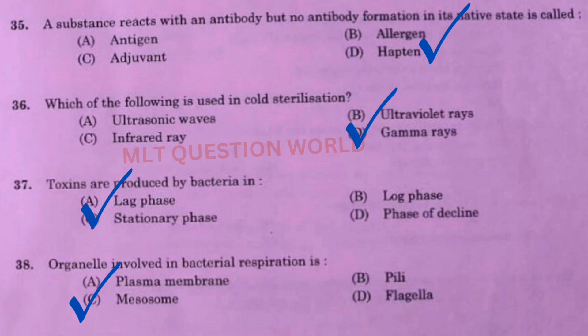Next one: Which of the following is used in cold sterilization? The right answer is option D, gamma rays. Next one: Toxins are produced by bacteria in? The right answer is option C, stationary phase.